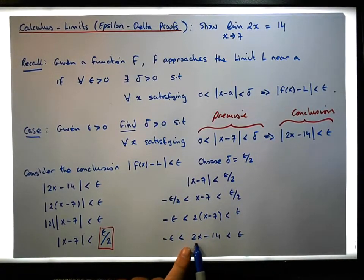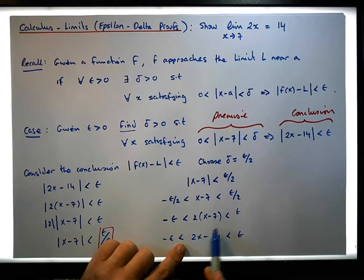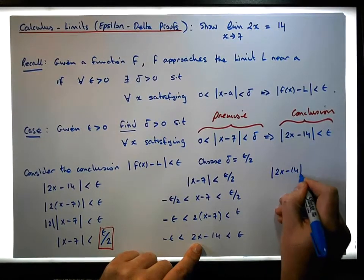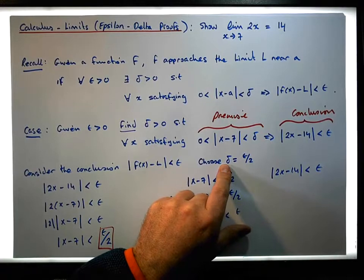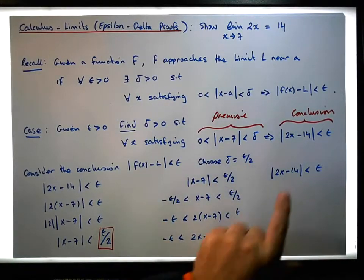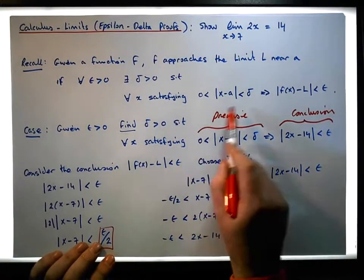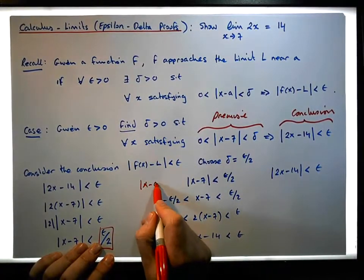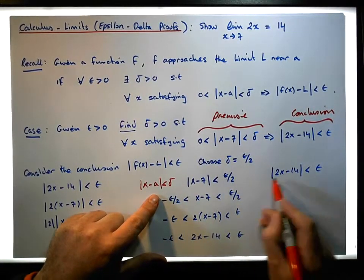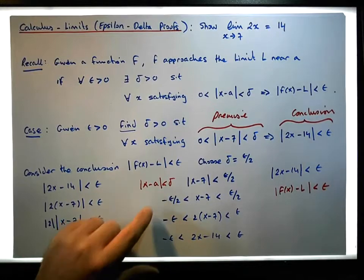What have we got? We've actually reduced the premise — the absolute value of x minus a, which is x minus seven less than delta — down to this fact here, which is telling us that the absolute value of two x minus 14 is less than epsilon. So if we choose delta to be epsilon over two and work off the premise with this particular condition, what we end up with is exactly the conclusion we need. This represents x minus a is less than delta, and what we've deduced from this is that f of x — because the absolute value of f of x minus L is less than epsilon — is exactly what we needed to show.